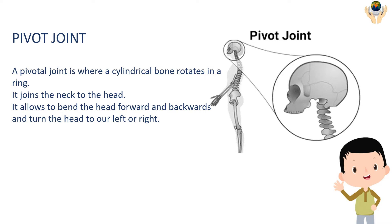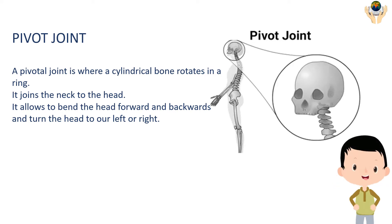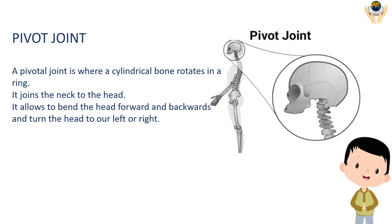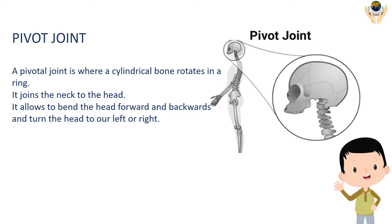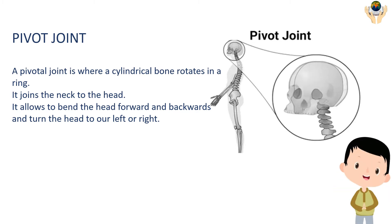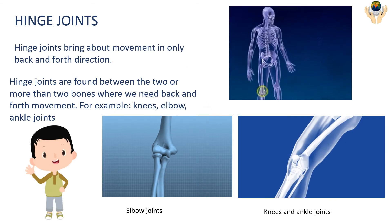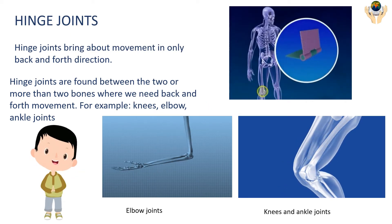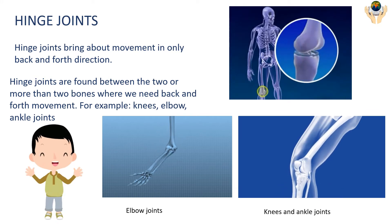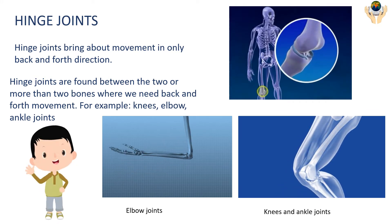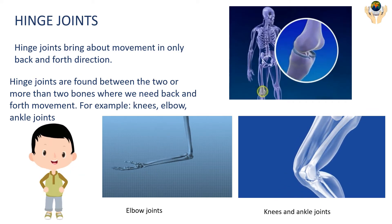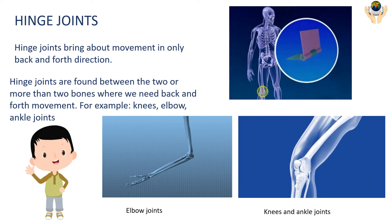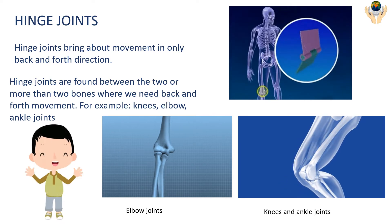Pivot joint: a pivot joint is where a cylindrical bone rotates in a ring. It joins the neck to the head and allows bending the head forward and backward and turning the head left and right. Hinge joints: hinge joints bring about movement in only a back-and-forth direction. Hinge joints are found between two or more bones where we need back-and-forth movement, for example knees, elbows, and ankle joints.